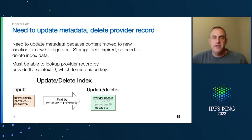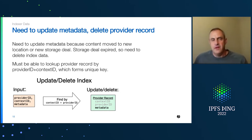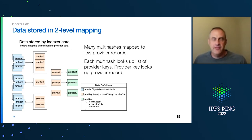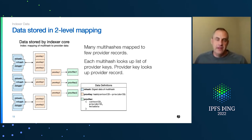When we need to update metadata, we don't want to update every single multi-hash — that could be millions. This is where the context ID comes in. The context ID is used to look up or delete the provider record. The indexer stores a two-level mapping: each multi-hash maps to a list of provider keys, and then each provider key maps to the individual provider record. By doing this, we can index provider records by multi-hash or by context ID.